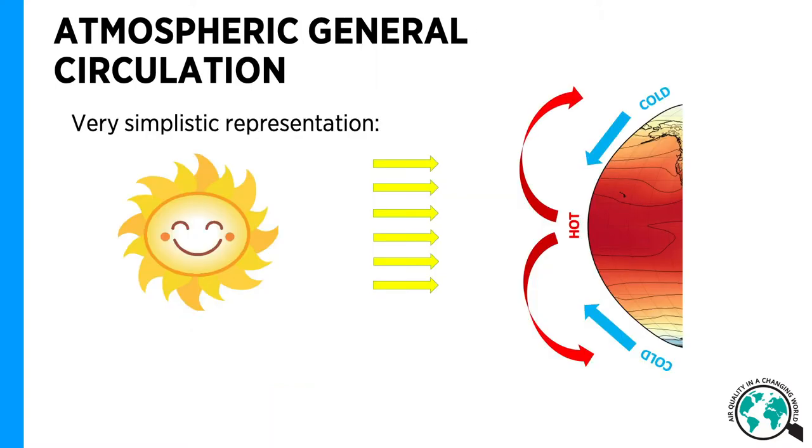As the Earth is spherical, the amount of radiation per square meter is higher at the latitudes perpendicular to the incoming radiation and smaller at higher latitudes.